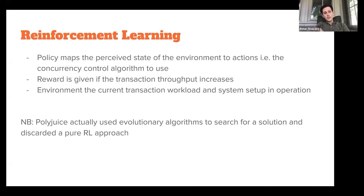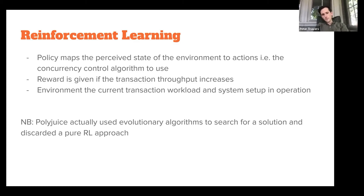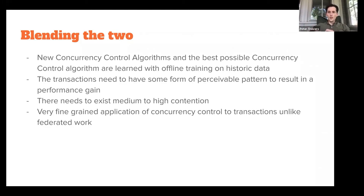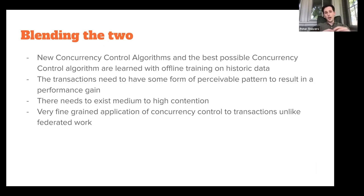Our reward is maximizing transaction throughput, and the environment is the current transaction workload and system setup. We're effectively able to learn new concurrency control algorithms and find the best possible ones via offline training on historic data gathered about the system. We apply this evolutionary algorithm, learning the best concurrency control algorithm from historic data about an existing database.